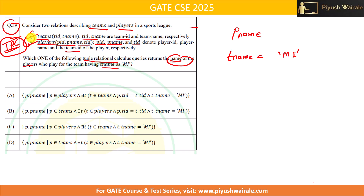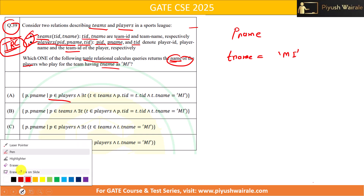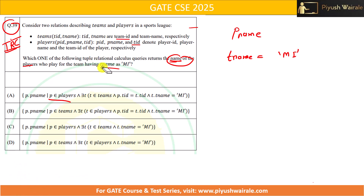Let's look at option A. We have P.PNAME, where P belongs to Players — so we are referring to the Players relation as P and projecting P.PNAME. Whatever attribute we specify before the vertical bar gets projected. If we also wanted PlayerID we would write P.PID, P.PNAME. So projecting PNAME here is correct and matches our requirement.